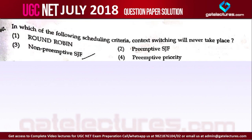Next question is question number 60. This question is asking: in which of the following scheduling criteria will context switching never take place? In which of these scheduling algorithms will context switching never take place?